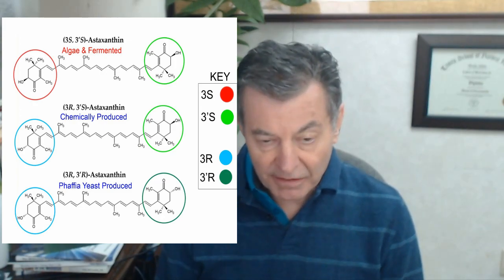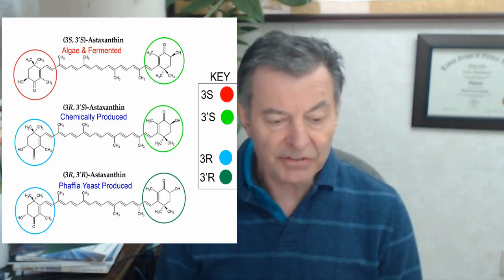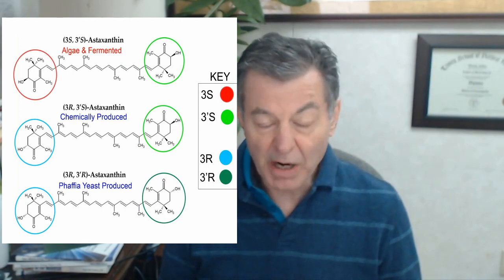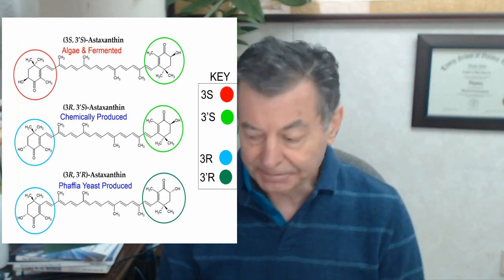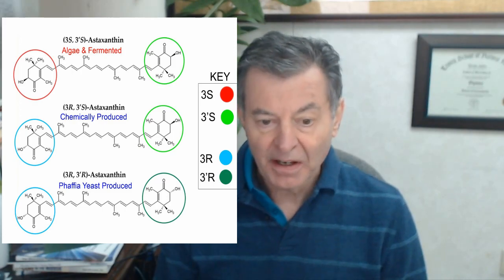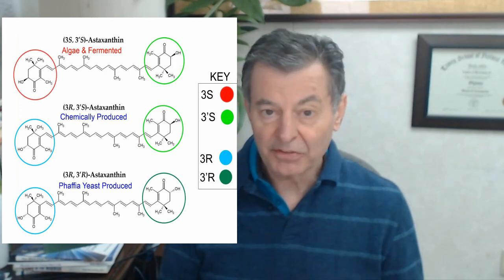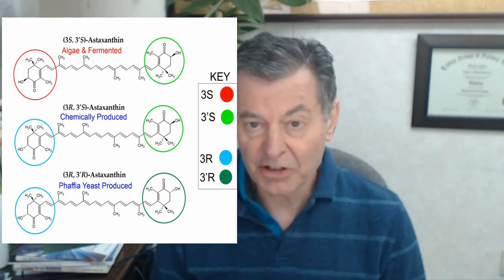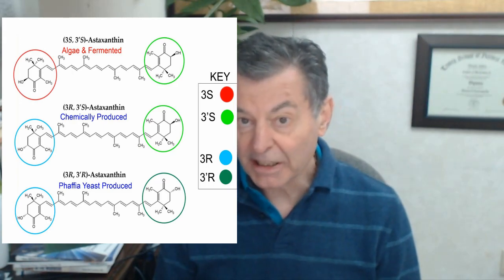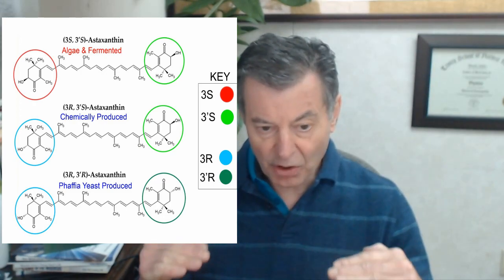Then there's fafia yeast-produced astaxanthin — you look on the bottom there — and that is 3R3R. So that's not the real thing at all. You want 3S; 3R is not really ready for prime time. It's not true astaxanthin — it's kind of fake astaxanthin. This is used for fish feed, and even for fish feed it's substandard. I don't want to start any rumors, but there have been stories about fish being fed it. It definitely is not true astaxanthin — that king of all carotenoids.